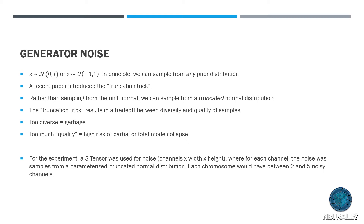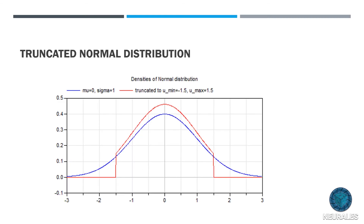The idea is that formatting noise as an image may give us more information than simply using a noise vector. The chromosomes have between two and five noisy channels. Looking at the truncated normal visualization: the blue curve is the typical unit normal distribution - what noise values are usually sampled from for a GAN. The red curve is the truncated normal, which is what our GANs will sample from. The noise will sometimes be sampled from a smaller range, sometimes a larger range, but the key idea is that the normal distribution is truncated so that noise values are restricted within a smaller interval.